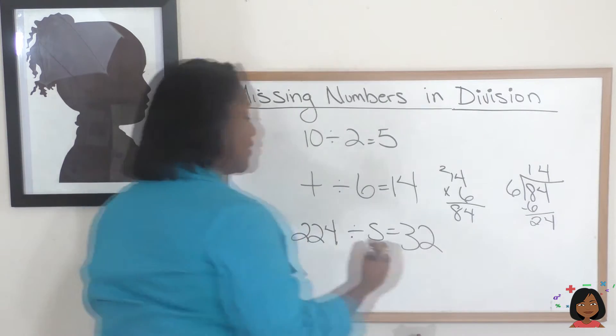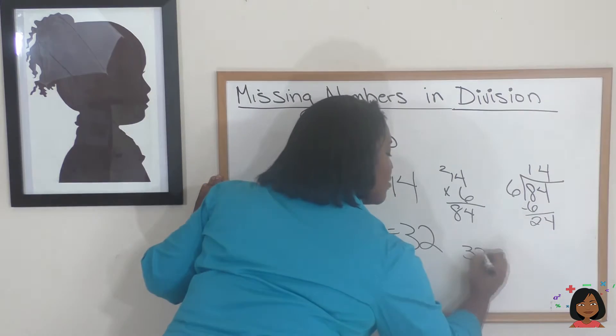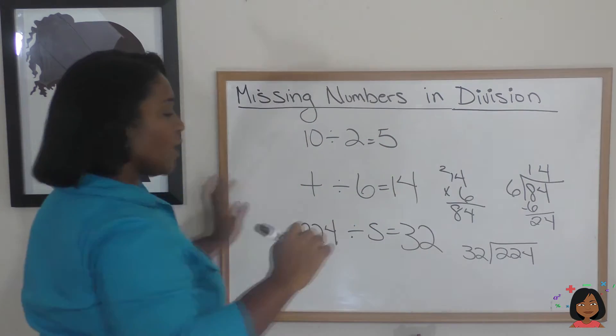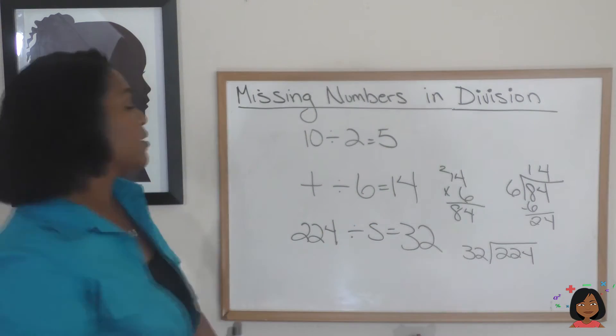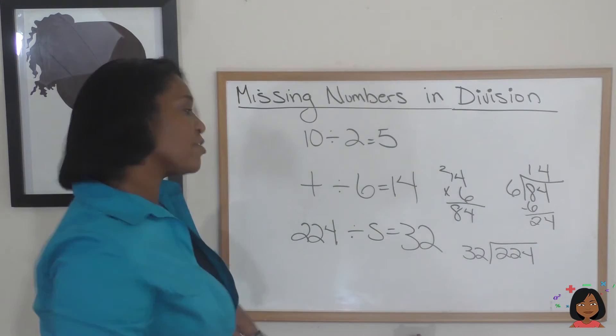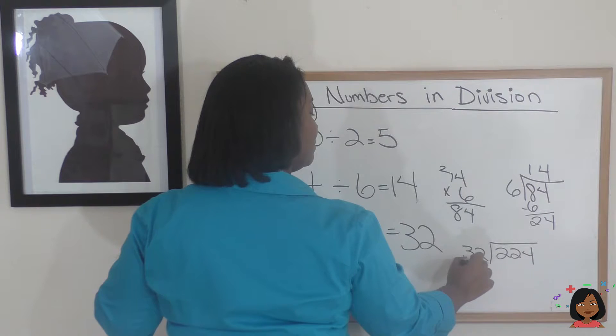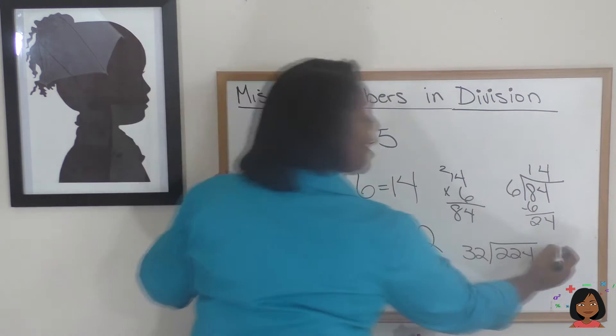And that'll give us our answer. So let's do it: 32 into 224. I like to do my math over to the side. Let me think... would it be 6 or 7? Let's try 7.